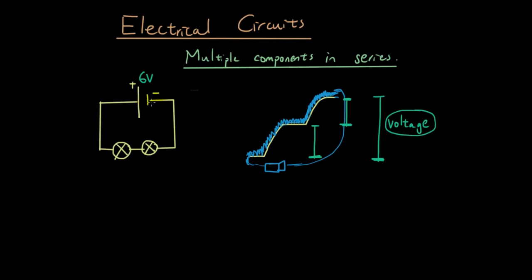The height of the different sections of the hill you can think of as the voltage across each light bulb. The water is flowing down this bit, and then as it goes through the light bulb it's flowing down this hill, and then there's that flat bit, and then it flows down the hill again. The voltage of each light bulb has to add up to the total height of the hill. So if this light bulb has a voltage of 3 volts, then this light bulb also will have a voltage of 3 volts, and they both add up to 6 volts.